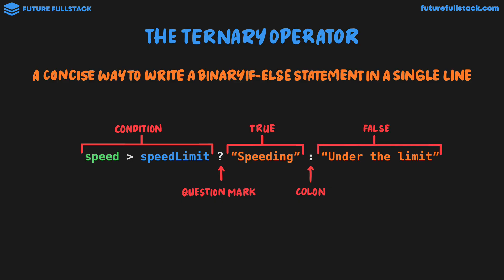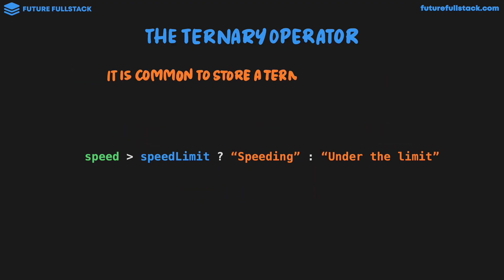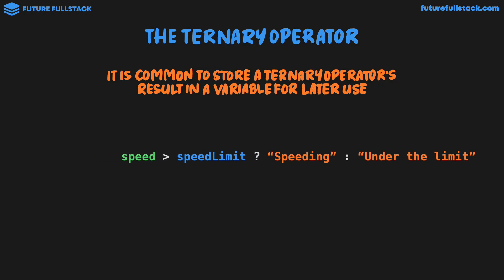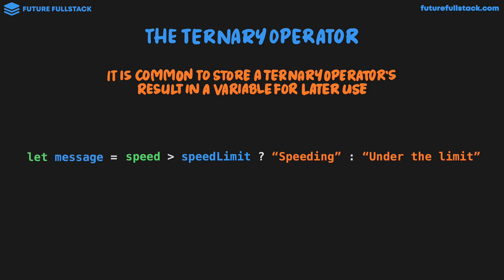On the far left is our condition we're checking, which in an if statement would appear in our brackets. We then have a question mark followed by the true outcome, which would appear inside the code block of an if statement. We have a colon followed by the false outcome, which would ordinarily be contained in the else code block. It is common to store a ternary operator's result in a variable for later use, so most of the time we're going to be writing code like: let message equal our ternary operator, whereby the result is stored in a variable.